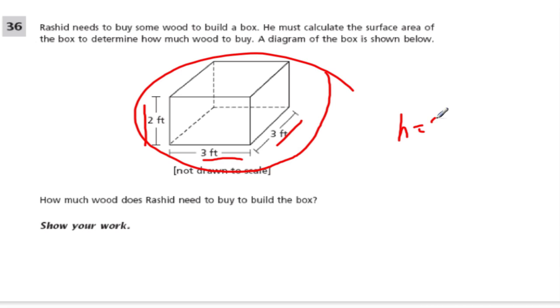Let's call this one up and down height. So our height is 2 feet, and our width is 3 feet, and our depth, or our length, is 3 feet.